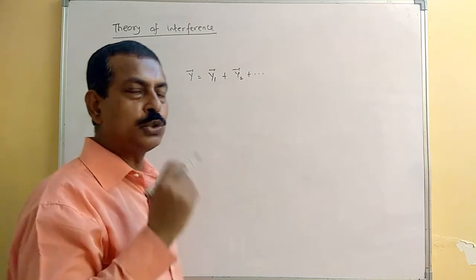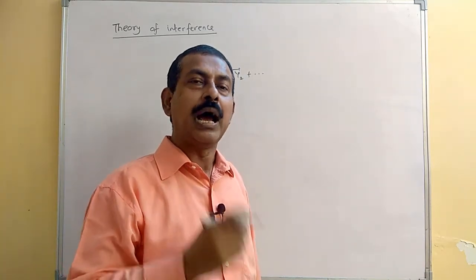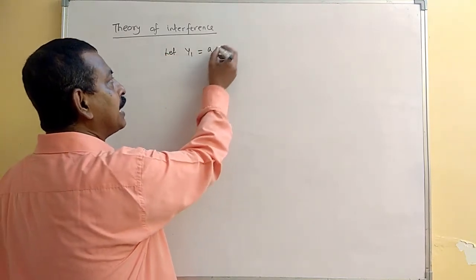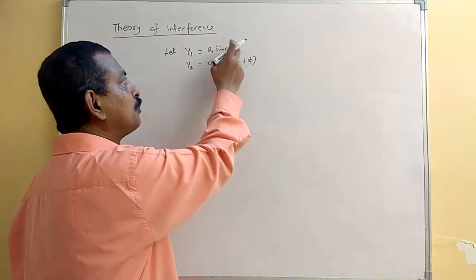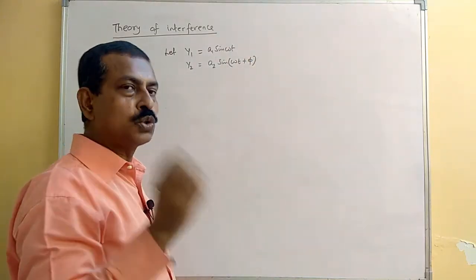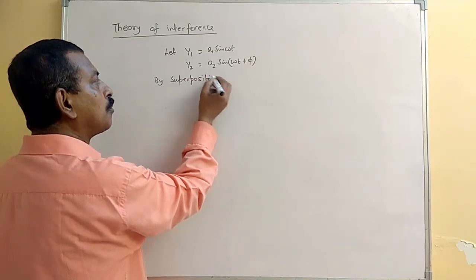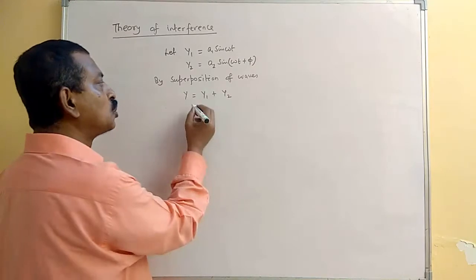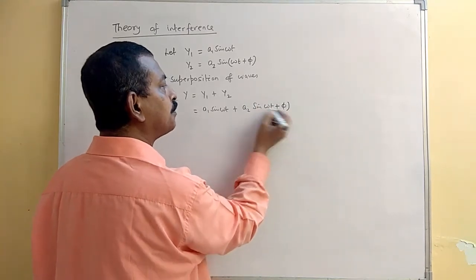In interference, two waves of the same frequency and nearly the same amplitude move in almost the same direction, and when they meet they give rise to the phenomenon of interference. The second wave leads the first by a phase difference phi. By the superposition principle, y = y1 + y2, which gives a1·sin(ωt) + a2·sin(ωt + φ).